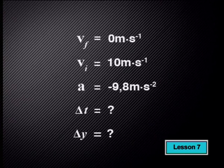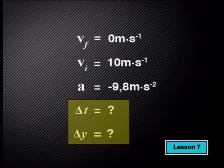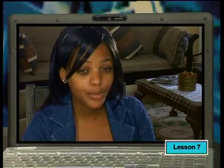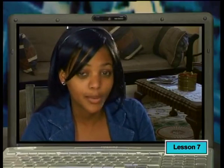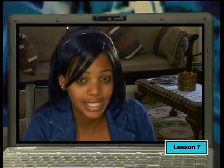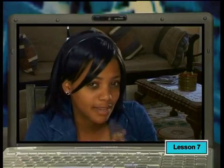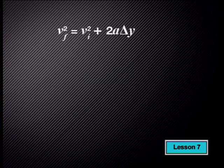This is what we know. Change in time and change in displacement are unknowns. We can't use any of the equations with time because we don't know the time taken. The correct equation to use is: final velocity squared equals initial velocity squared plus 2 times acceleration times delta y.